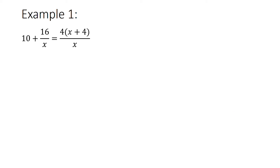So here's an example. There's my variable in the denominator, and it's an equation because there's an equal sign. A restriction states always that the denominator can't be equal to 0 — that's what a restriction is. So in this case, my restriction would be the denominator, which is x, cannot be equal to 0.